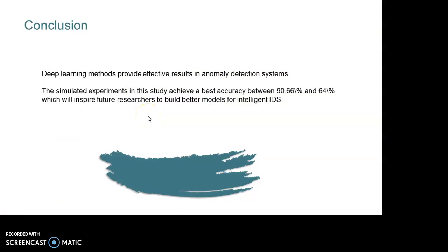Deep learning methods provide effective results in anomaly detection systems. In this study, we proposed a modular anomaly detection framework based on long short-term memory and feed-forward neural networks to deal with high-dimensional problems. Both models, based on feature representation, determine their ability to predict normal and abnormal behavior of network traffic by mitigating data complexity without losing critical functionality and detecting multiple attacks with a low loss function.